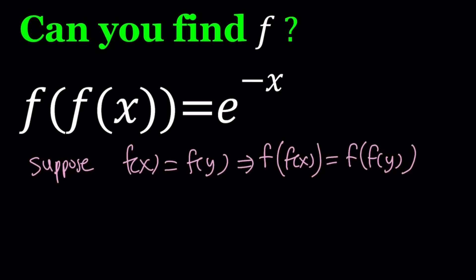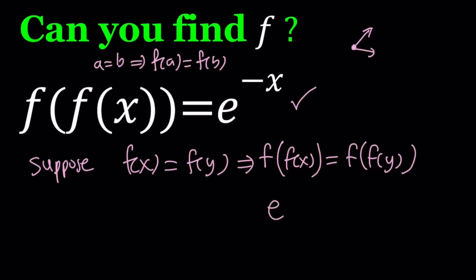This is always defined for functions: if a is equal to b, then f of a is equal to f of b. Now we do know something about f of f of x — it's given as e to the power negative x. And f of f of y is just the same equation where x is replaced with y, so it is e to the power negative y.